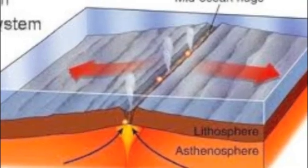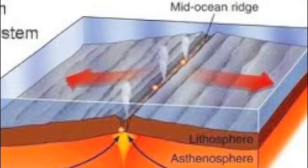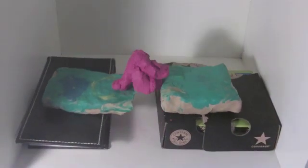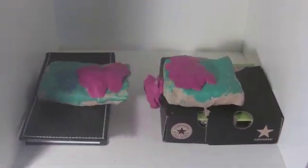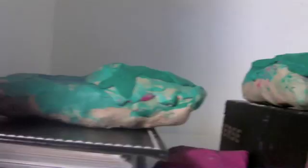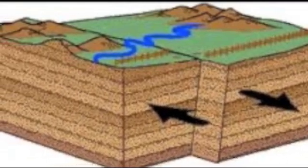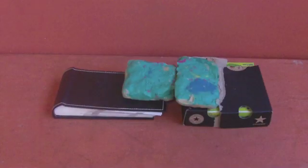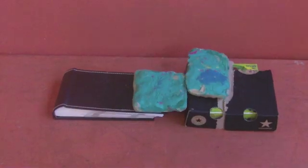Lastly, there is where plates diverge. Divergent plate boundaries are often found under water, where magma emerges from the mantle and creates new crust. But other plates move slowly alongside each other. These are called faults, where at the edges of two plates, the crust is moving in different directions.